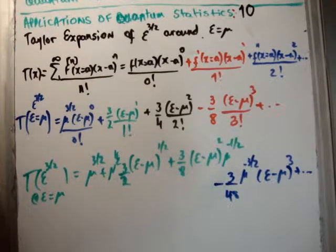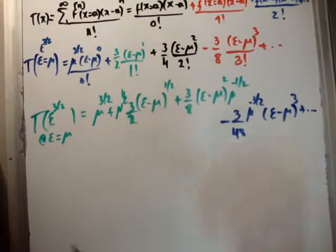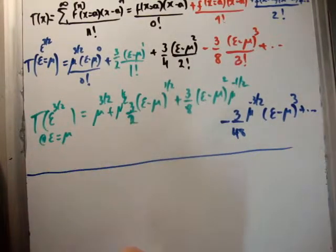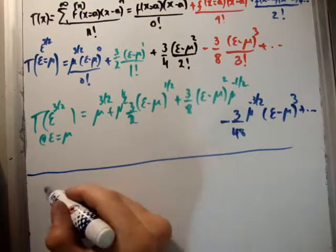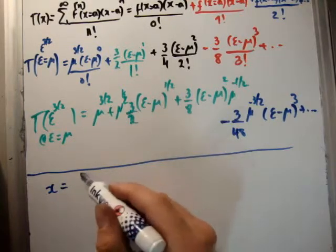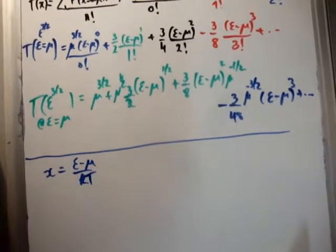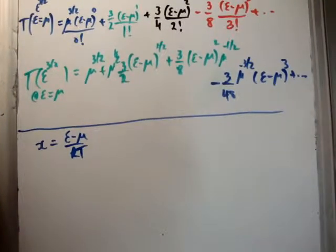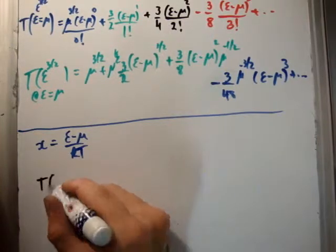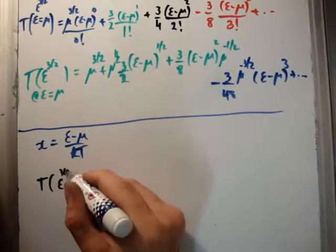The last thing I'm going to do is a bit of sleight of hand. We're just going to do a small change of variable to make it look nicer. I'm going to say x equals (ε - μ)/(kT). And the Taylor expansion then of ε^(3/2) becomes